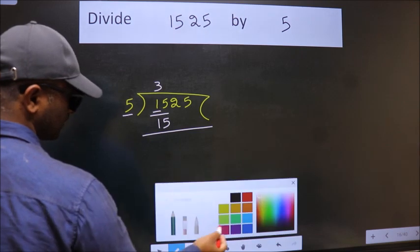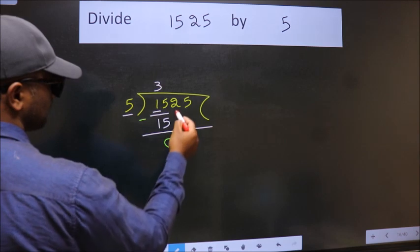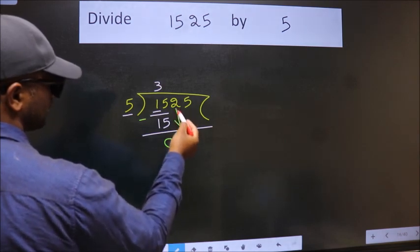Now we should subtract. We get 0. After this, bring down the next number. So, 2 down.